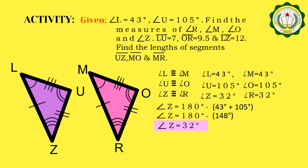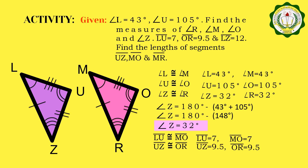Let us now continue for the sides of the triangles. We have segment LU congruent to segment MO. Since LU is equal to 7, then MO is also 7. Segment UC is congruent to segment OR, and since OR is equal to 9.5, then UC is also 9.5. Lastly, segment LZ is congruent to segment MR. Since LC is equal to 12, then MR is equal to 12 also.